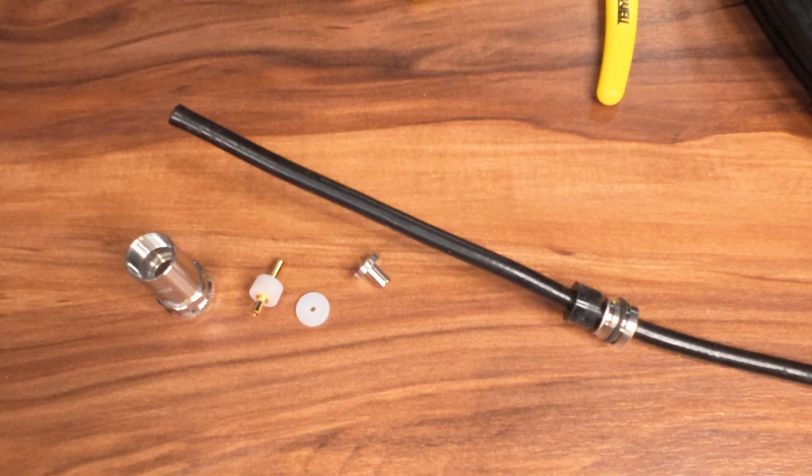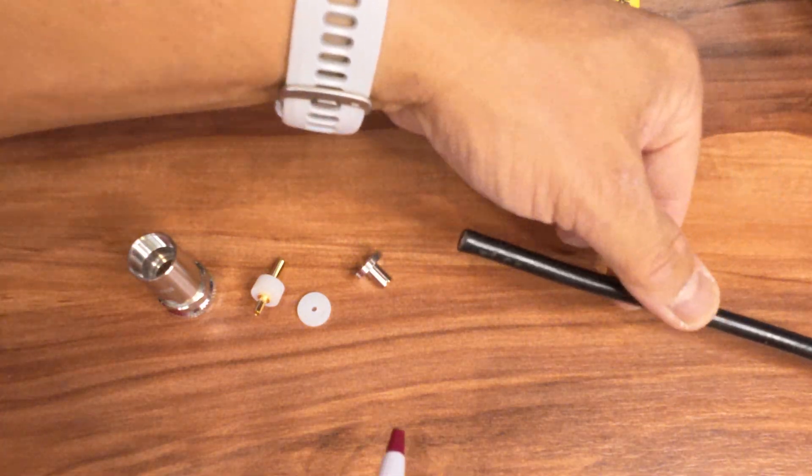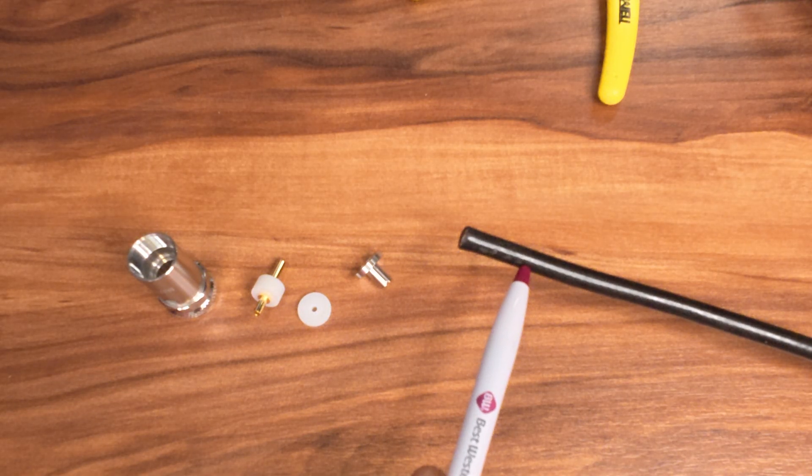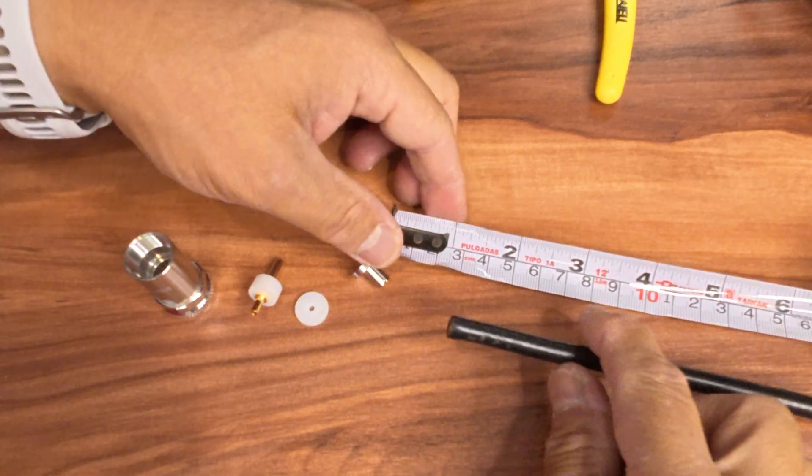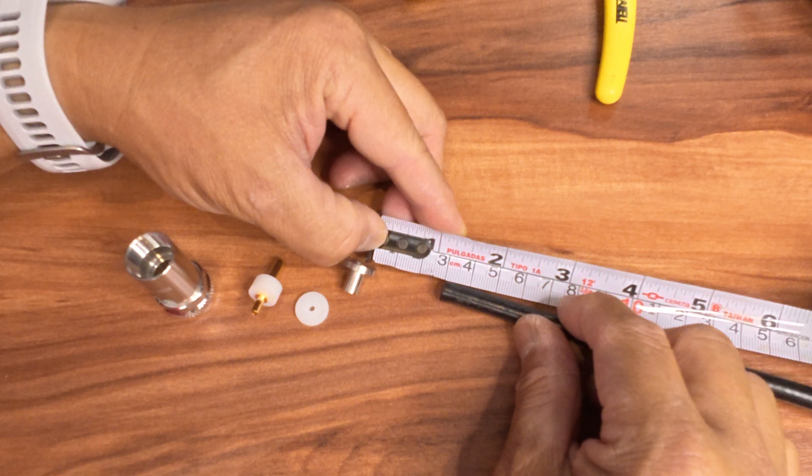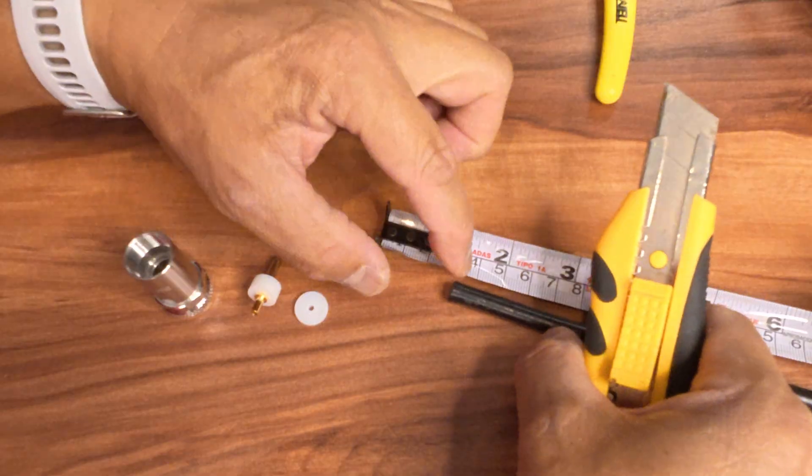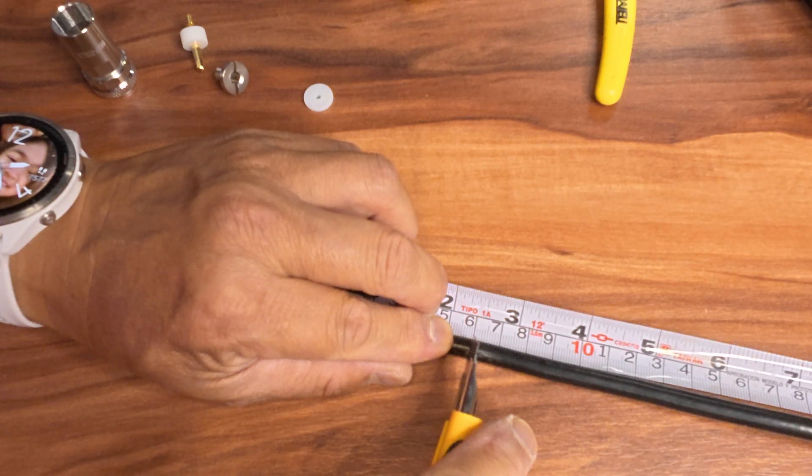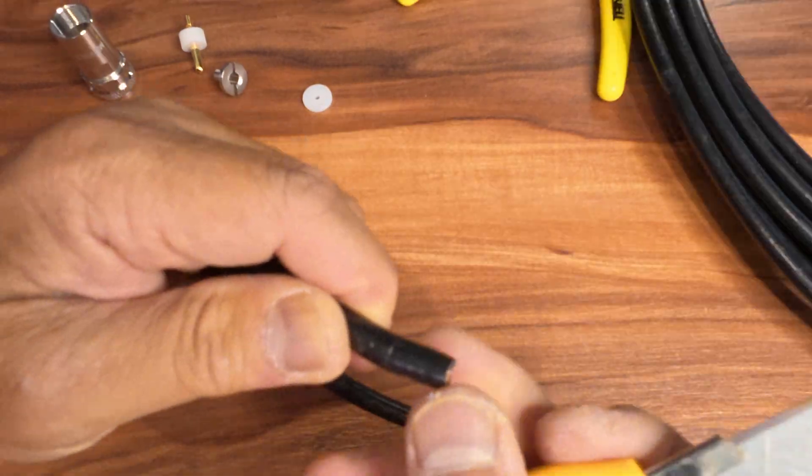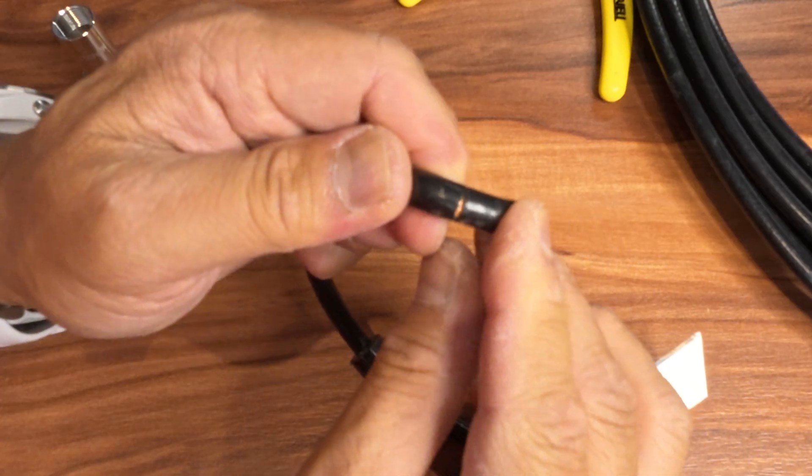We're going to measure approximately 10 millimeters from the end. And then we're going to cut off the outer sleeve. I'm just going to estimate 10 millimeters using a centimeter scale. I'm going to use an exacto to score it and remove the sleeve. I'm just going to score it all the way around. See how it's separating there.